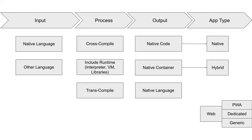The output category determines the type of app generated. Native code is the low-level code executed natively by the platform, and native code generates native apps. A native container bridges web technologies with platform-specific technologies by running web code in WebView on the native platform, generating hybrid apps. A native language could also create a web app if the output language is JavaScript or WebAssembly.